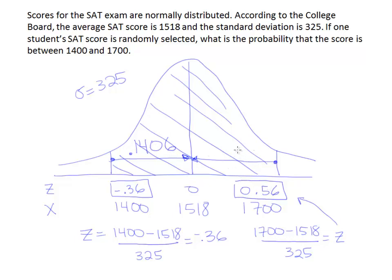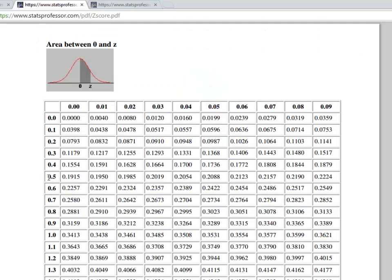Now I'm going to look up 0.56 to get the area here in this missing space. I go to the 0.5 position and over to where the 6 position is across the top, and we get the answer 0.2123 as the area.